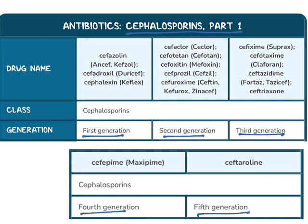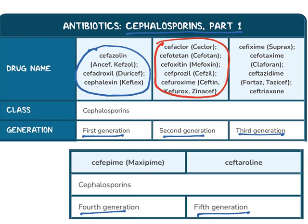The classification of cephalosporins is based on generations. First generation includes cefazolin, cefadroxil, and cefalexin. Second generation includes cefaclor, cefotetan, cefoxitin, cefprozil, and cefuroxime. Third generation includes cefixime, cefotaxime, and ceftazidime. Fourth generation includes cefepime, and fifth generation includes ceftaroline. Each successive generation reflects increased antibacterial activity.